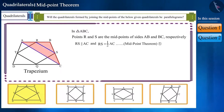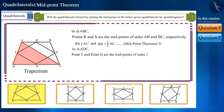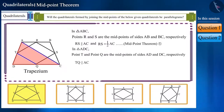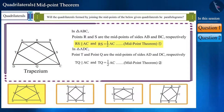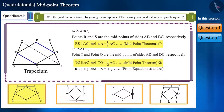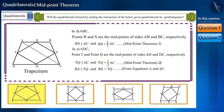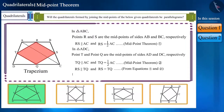Similarly, in triangle ADC we can use the midpoint theorem and say that TQ is parallel to side AC and half its length. Looking at equations 1 and 2, we can say that RS is parallel and equal to TQ. Since a pair of opposite sides of quadrilateral RSQT is parallel and equal, therefore RSQT is a parallelogram.